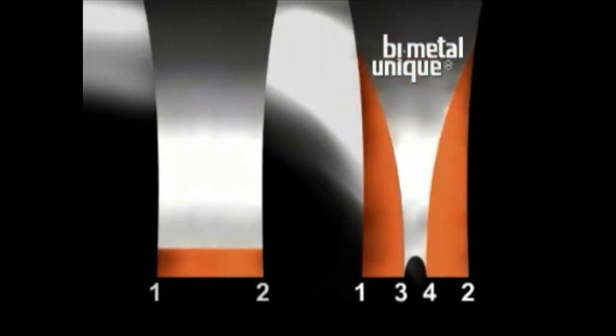Because it's softer than the high-speed steel, the carbon steel backing wears out with friction, forming two new cutting edges at the center of the blade, a total of four cutting edges.